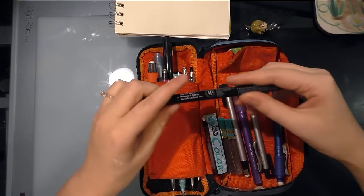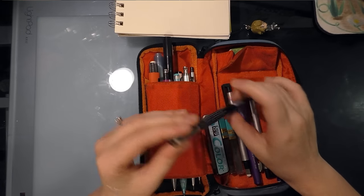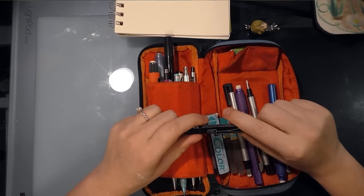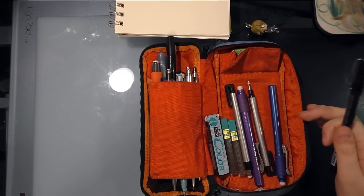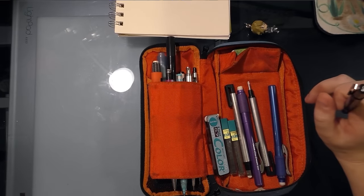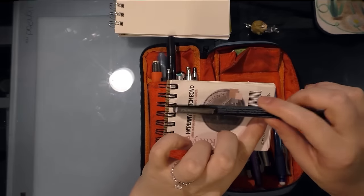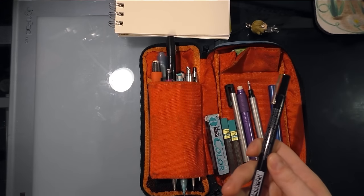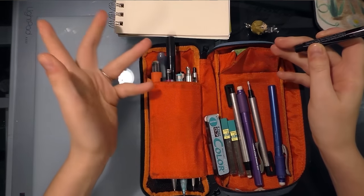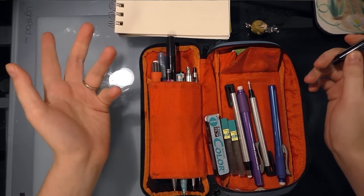Then I have a Prismacolor 0.5 and this really should just live in my purse instead of in my pencil case, because sometimes I don't want to carry this big thing around with me. So I'll carry just like a couple of inking pens and like a miniature sketchbook, and this belongs to the set that's in my purse. But I actually really like Prismacolor, they call them art markers but they're really like fine liners or technical pens.